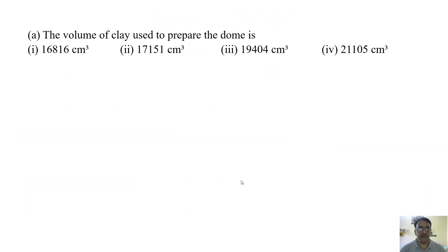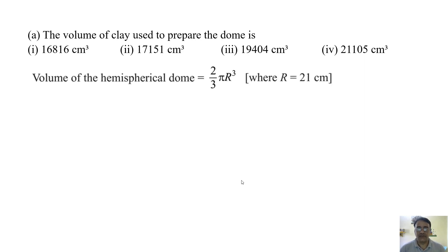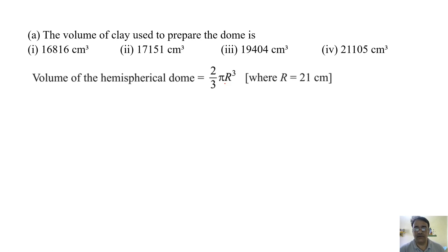The first question: find the volume of clay used to prepare the dome. The diameter of the dome is given as 42 centimeters, so the radius will be 21 centimeters. The dome is in the shape of a hemisphere, so we use the formula: volume = 2/3 × π × r³. We substitute the value of r here: 2/3 × 22/7 × 21 × 21 × 21.